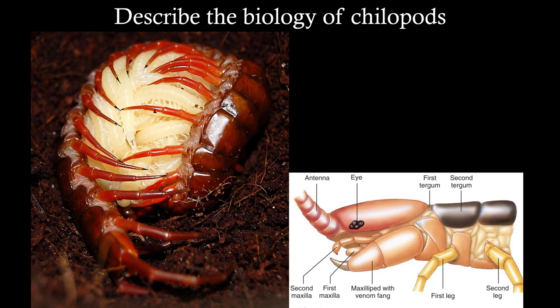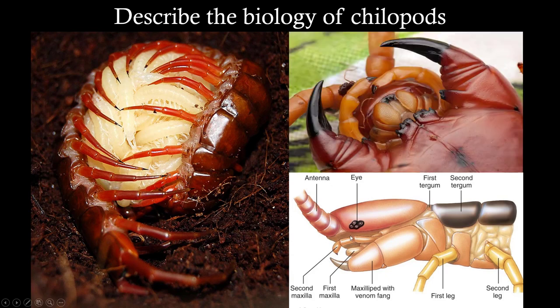Centipedes make pretty good parents — they dig a burrow and incubate their eggs. When the young hatch, they look like miniature centipedes, which is called direct development. Mothers, and sometimes fathers, guard the young for an extended period before they go off on their own. Centipedes don't have compound eyes; rather, their eyes are clusters of ocelli, highlighting their nocturnal lifestyle. Their antennae are important for sensing vibrations and chemicals, and their many legs also have tactile receptors. The maxilliped has a venom fang; mandibles are used for biting, maxilla for grabbing and subduing prey.